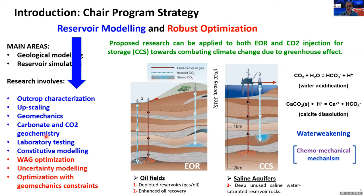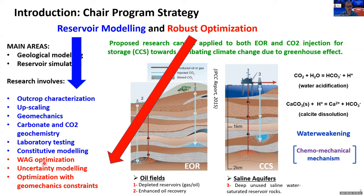We have a rock mechanics lab at our university very devoted to problems of CO2 and carbonate reactions, taking into account the chemical reactions and the changes in parameters of the rock. We also have a constitutive model to complement this experimental work, and we have a robust optimization area of our chair focused on WAG optimization, uncertainty modeling, and optimization with geomechanical constraints.